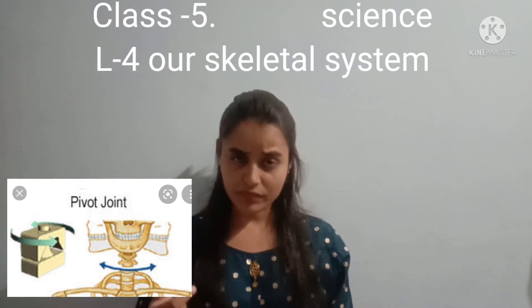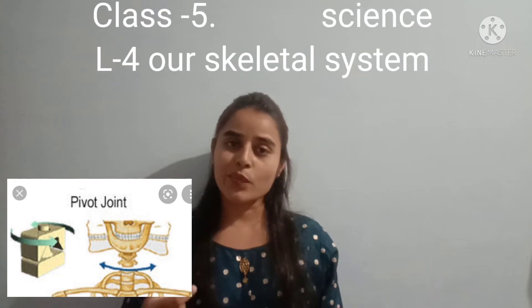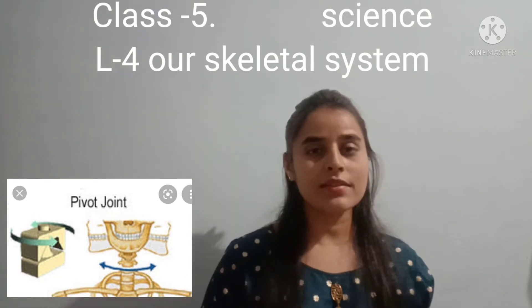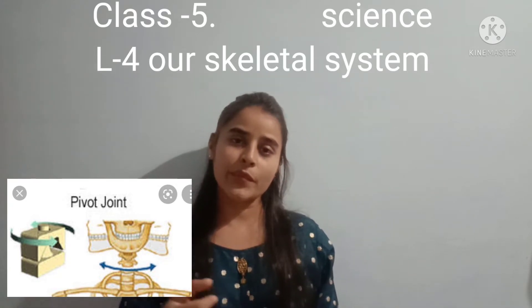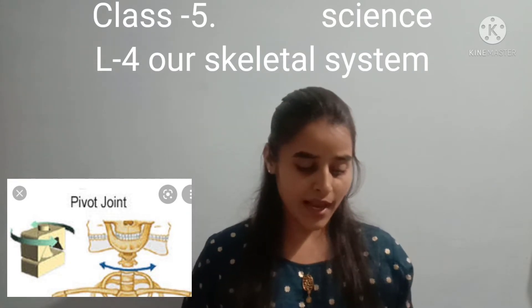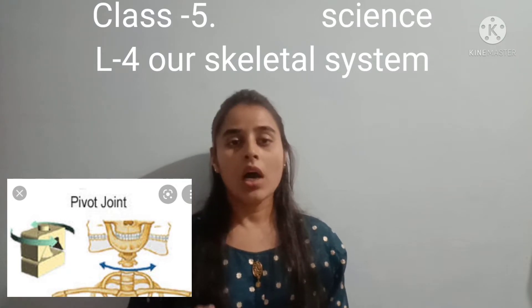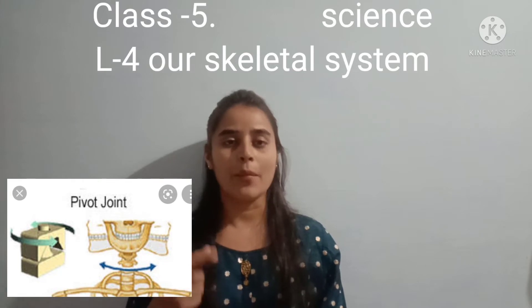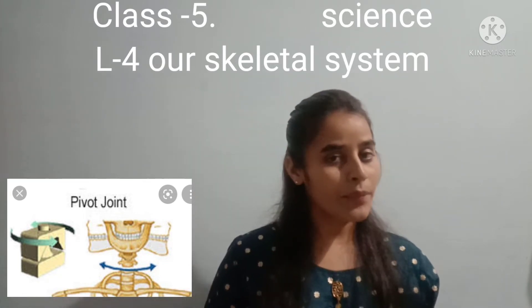The small bones are called vertebrae, and the joint between the first and second vertebrae is a pivot joint. This allows our head to move from side to side and up and down — our head can move upward, left, right, and down because of this pivot joint present in our backbone.